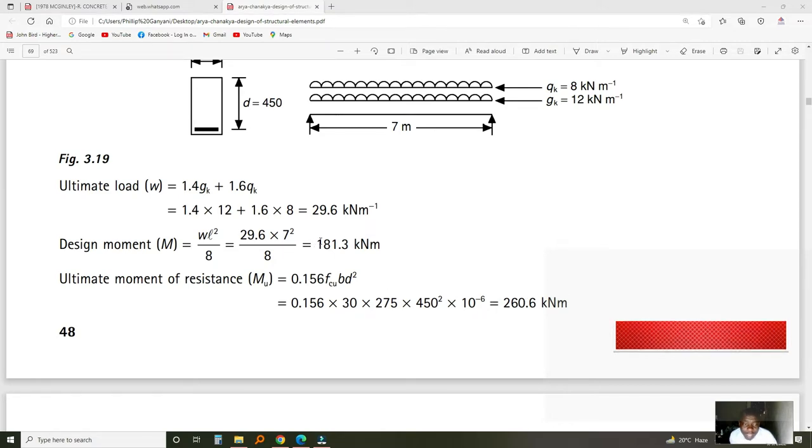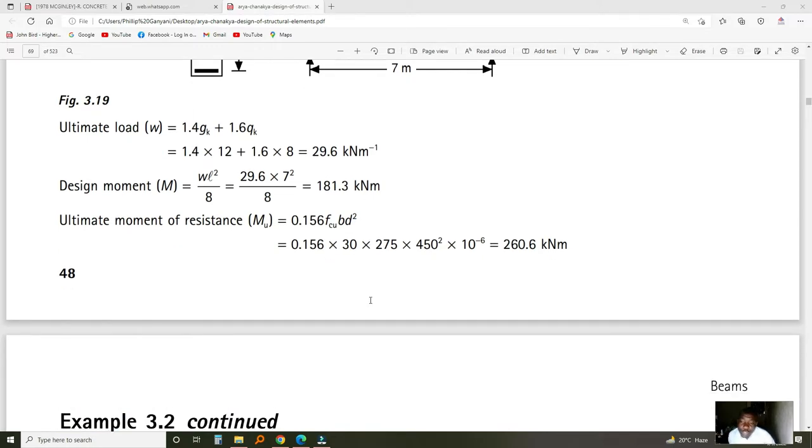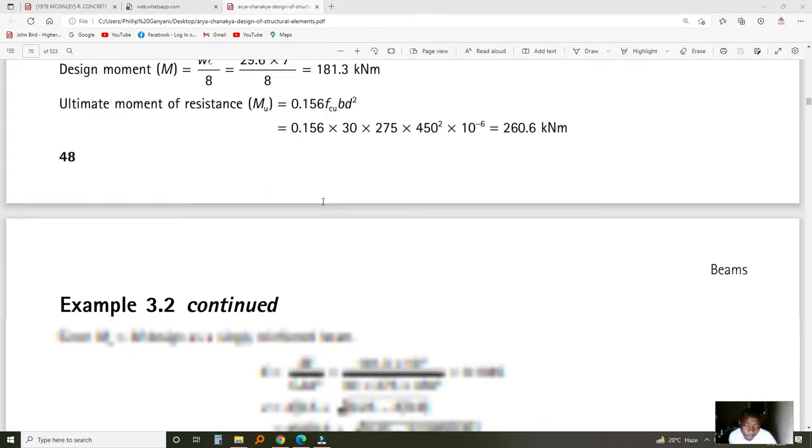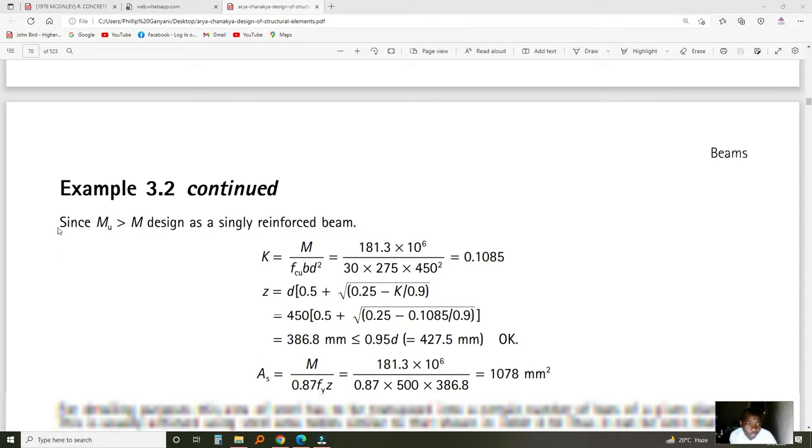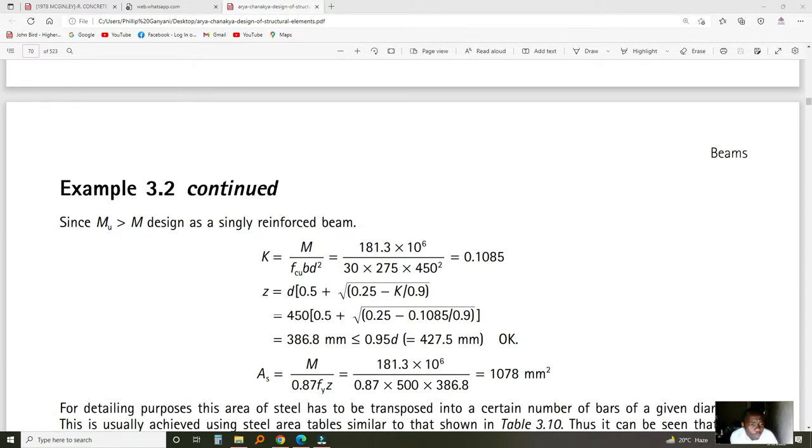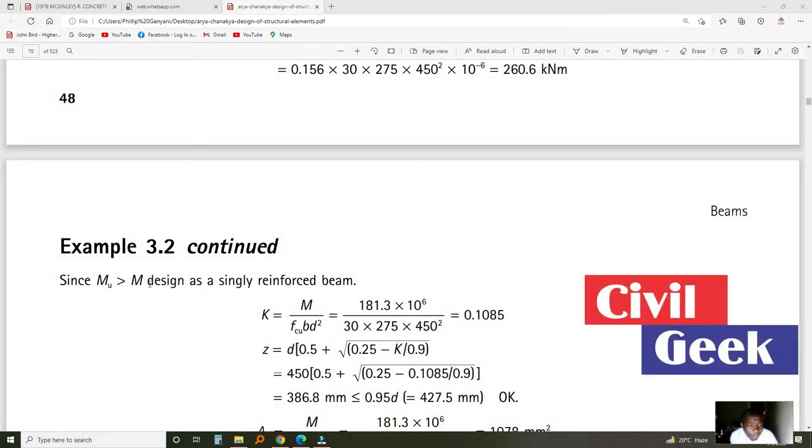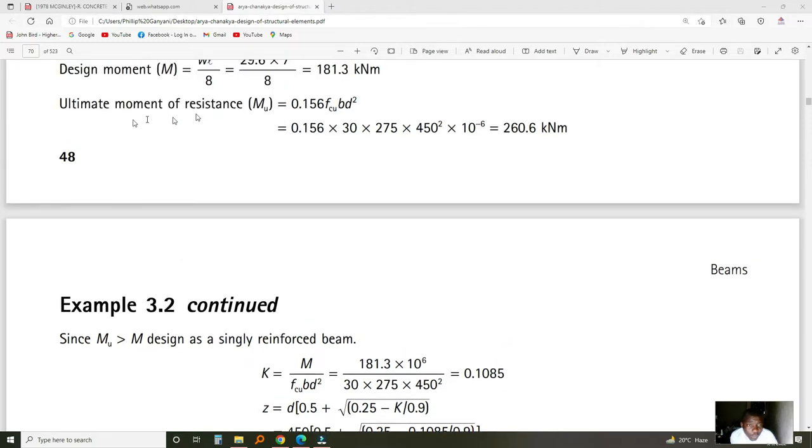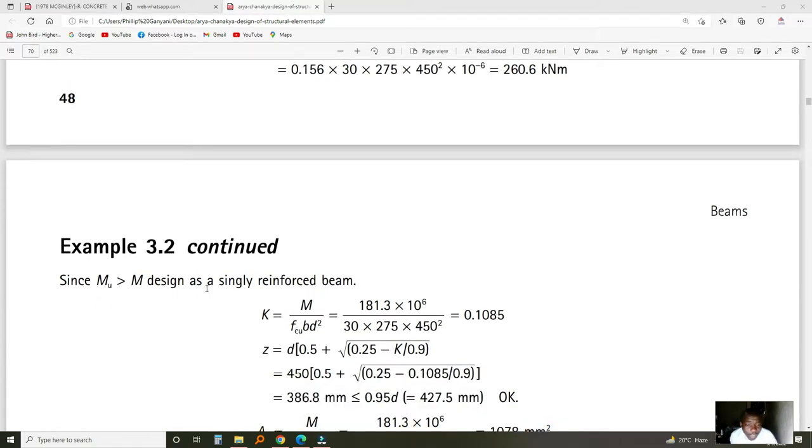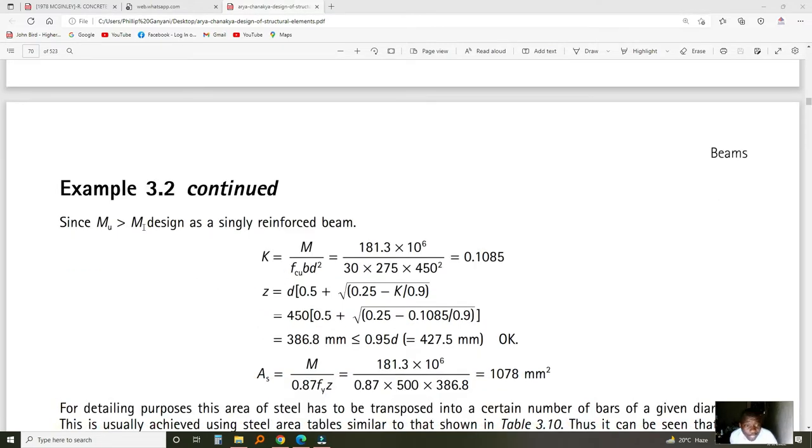Since this value is greater than the moment the structure will face under the worst possible situation, the beam is sufficient. You can reduce the section and still come up with a number above the design moment. Since MU is greater than M, the moment of resistance is greater than the moment the structure will face. It's okay and singly reinforced. If it was the other way around, it would be doubly reinforced or impossible. Let's focus on this part for today.